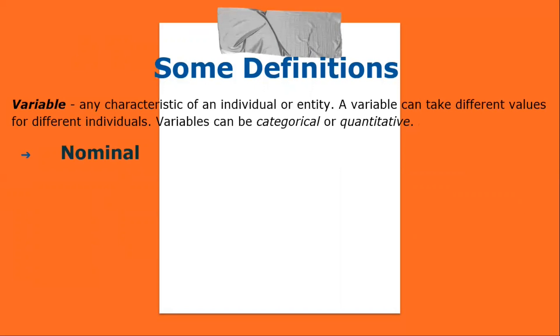Nominal categorical variables have no inherent order or ranking sequence, such as names or classes, e.g., gender. The only operation that can be applied to nominal variables is enumeration. Ordinal variables have an inherent rank or order, e.g., mild, moderate, severe; they can be compared as greater or less, but not by how much. Interval variables are ordered and additionally differences between values are meaningful; however, the scale is not absolutely anchored — calendar dates and temperatures on the Fahrenheit scale are examples. Addition and subtraction, but not multiplication and division, are meaningful operations.